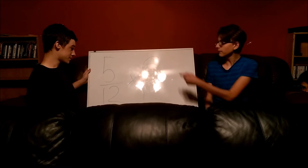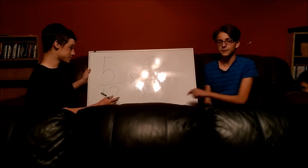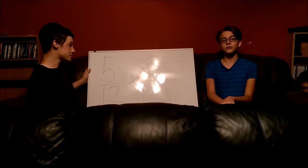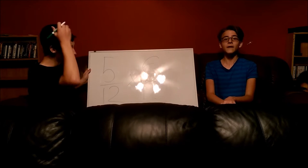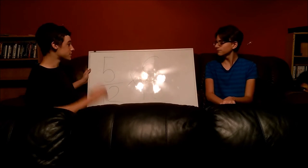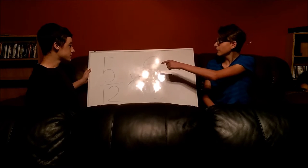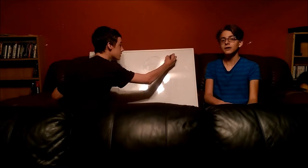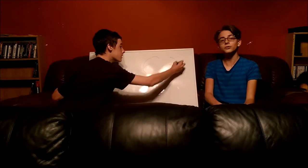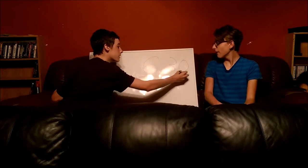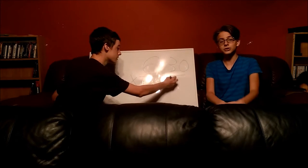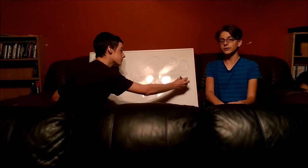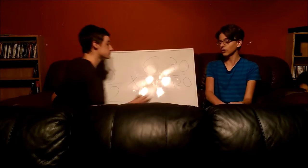Over here, we have set up 5 over 12 times 6 over 10. Now for multiplying fractions, there are two main ways to do it. One takes a little bit more time and is a little bit more complicated, but we're going to go through that one first and then give you the more helpful and easier one. So the first thing to do is multiply the numerators: 5 times 6 equals 30. Then you multiply the denominators: 12 times 10 equals 120. Now, 30 over 120 is 1 over 4.